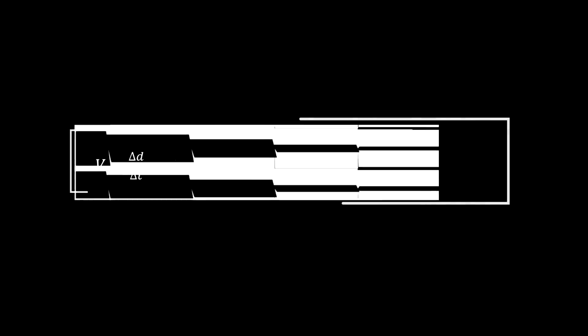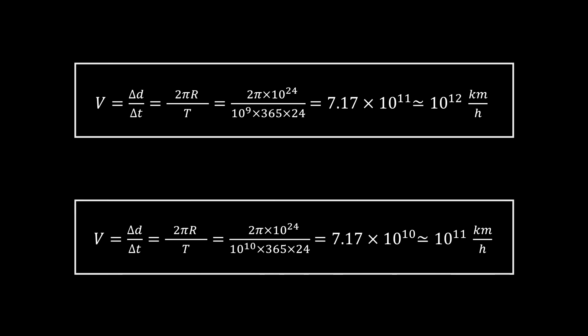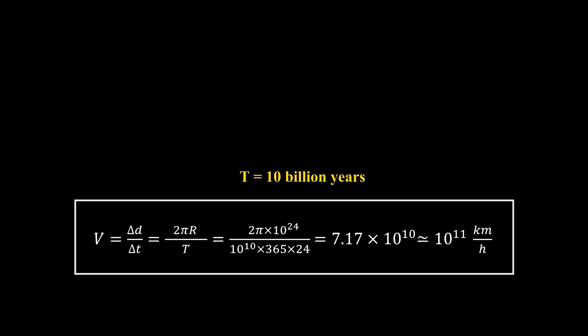By a simple calculation, we can see that the speed at the edges of the universe is approximately between 10 to the power of 11 or 12 kilometers per hour. That is 100 or 1000 times greater than the light speed, which is about 10 to the 9th power kilometers per hour in vacuum.